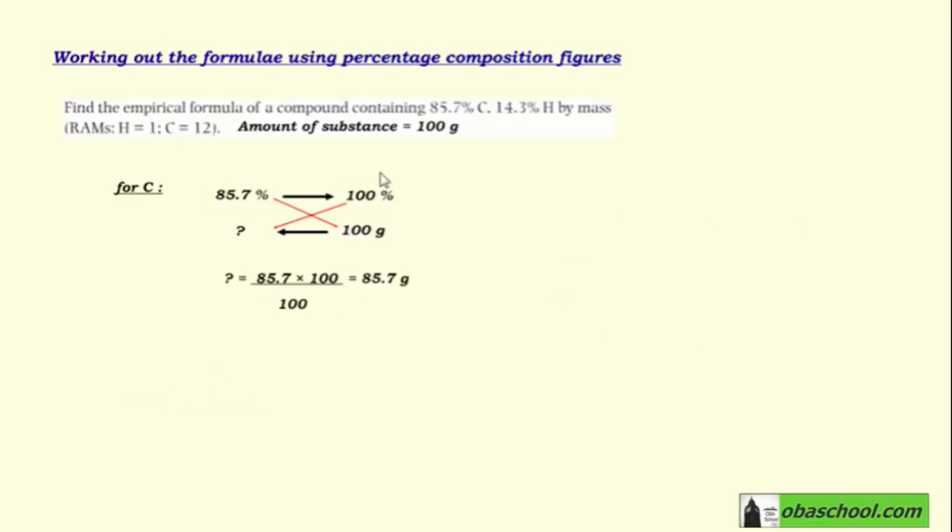Since 100% is alone, there's nothing to multiply it with, so we divide by 100. 100 goes with 100, we cross them out. Now we're left with 85.7. So the answer is 85.7 grams.